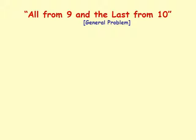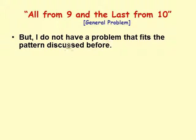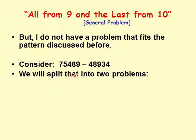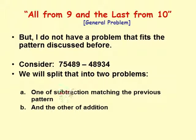Now we will discuss a general subtraction problem that does not exactly fit the pattern we have been using. Let's consider 75489 minus 48934. The first row is not a 1 followed by all zeros — it has a general form. We will split this into two simpler problems: one subtraction matching the previous pattern, and one addition.